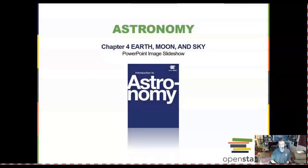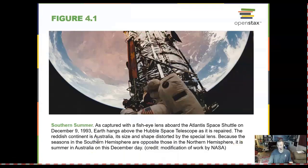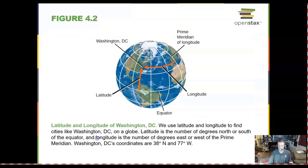Hello and welcome back. This is chapter 4 on Earth, Moon, and Sky. Here is the Hubble Space Telescope back in 1993, being worked on inside the cargo bay of the space shuttle Atlantis. The telescope has been in space since 1990.